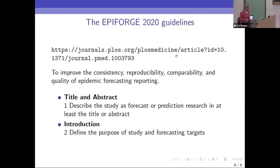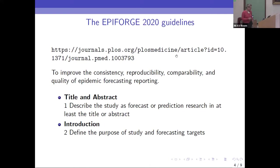To move on to what is actually being recommended: I would hope you'll start to think that quite a lot of this ought to be obvious — though obvious things aren't always done. The idea is to improve the consistency, reproducibility, comparability, and quality of forecast modelling. It's not saying anything about how you ought to do it. There is a discussion about what we mean by forecasting, predicting, projecting, and also a reference about what we even mean by mathematical models, because of course there are very many of them.